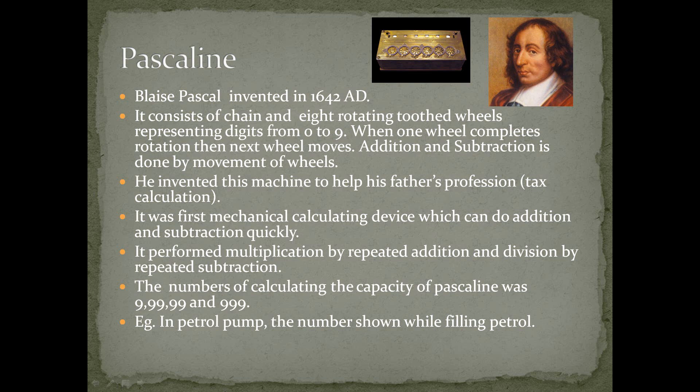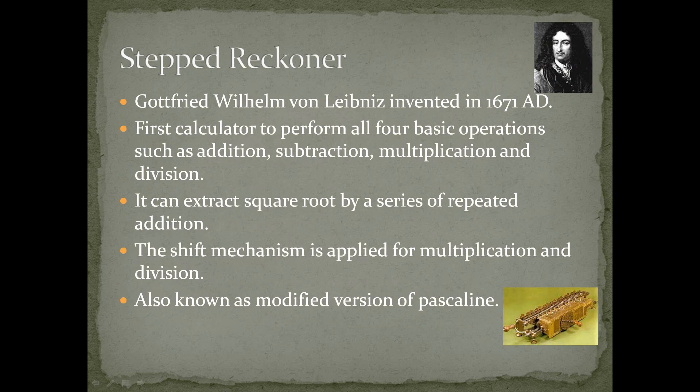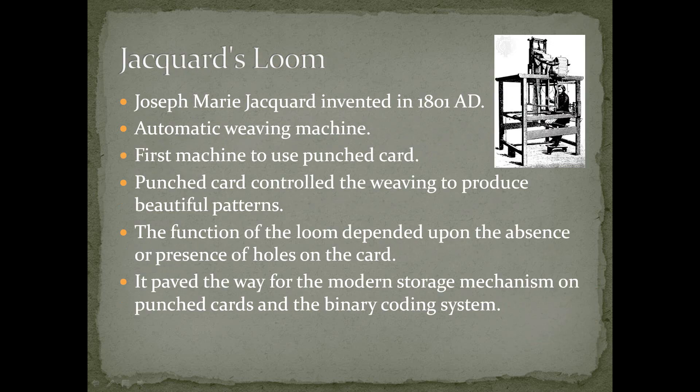Step reckoner was invented by Gottfried Wilhelm von Leibniz in 1671 A.D. It was the first calculator to perform all four basic operations: addition, subtraction, multiplication, and division. It can extract square roots by a series of repeated additions. The shift mechanism is applied for multiplication and division. It is also known as a modified version of Pascaline.